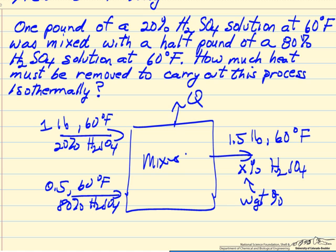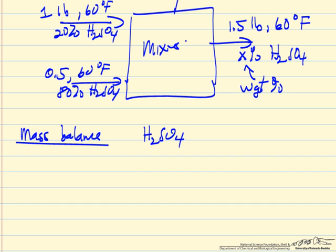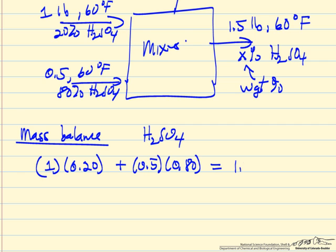So that means the first thing we want to do is a mass balance on the process. So mass balance on sulfuric acid. We have 1 pound, and it's 20% sulfuric acid, so it's 0.2 pounds of sulfuric acid. This half pound is 80%, and that means we have 1.5 pounds with a fraction x that we want to determine. So let's call x the fraction. And so we can solve for x equals 0.40, which means it's 40 weight percent in the exit.